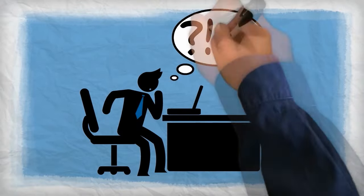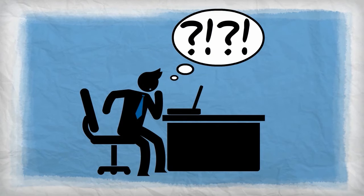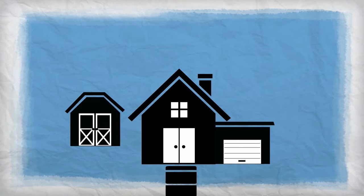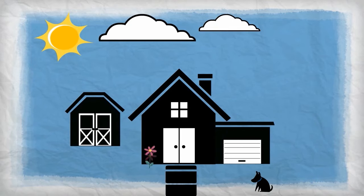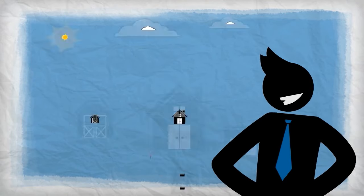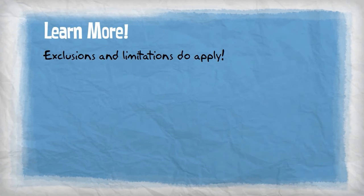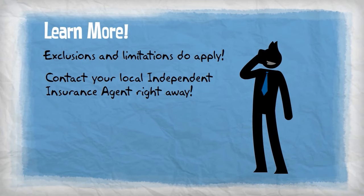We understand the details of insurance can be confusing. This video is just a short overview of the primary coverages provided by a standard homeowner's insurance policy. Just like every home is different, so is every insurance policy. The most important thing to remember is your policy should protect your needs. To ask questions and learn more about what coverages you need, contact your local independent insurance agent right away.